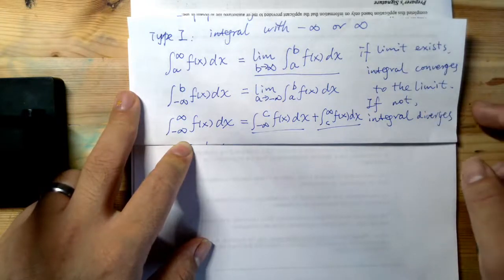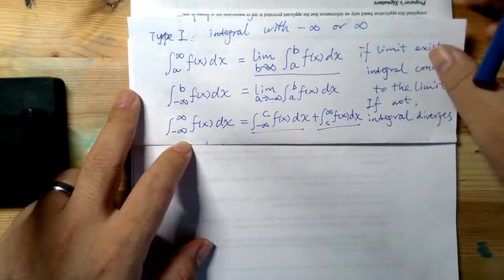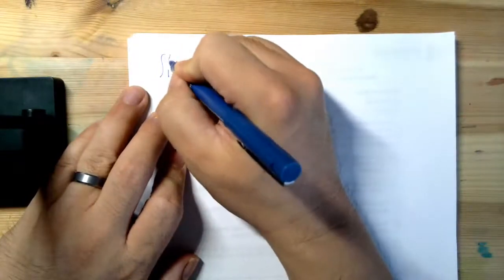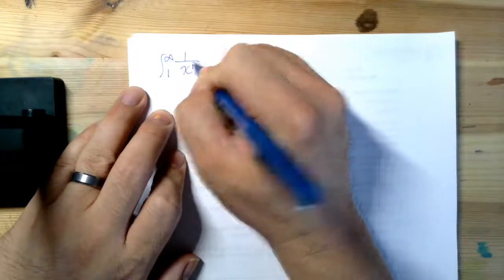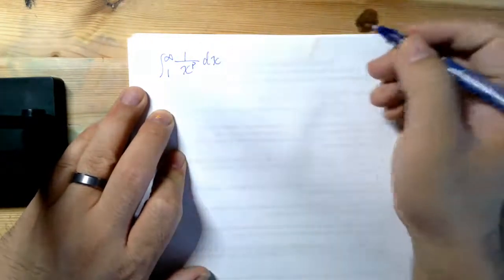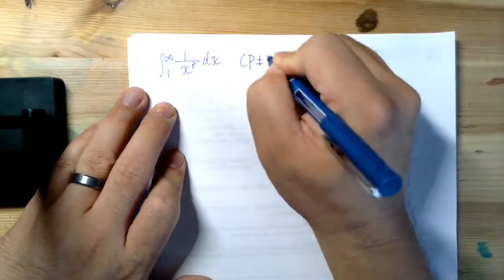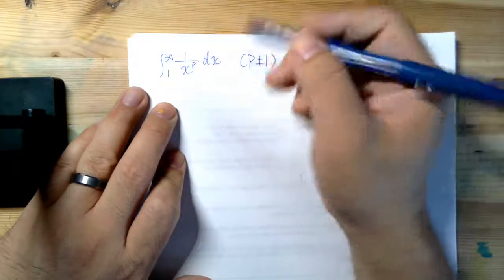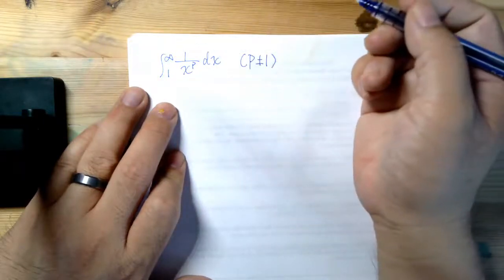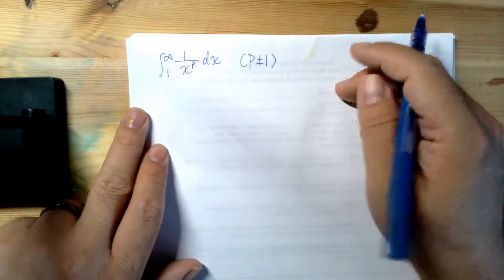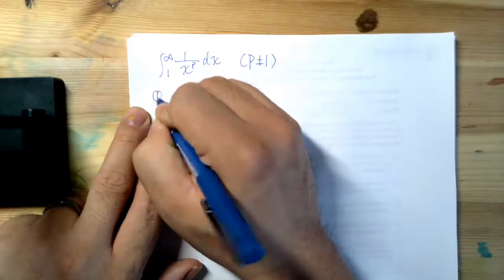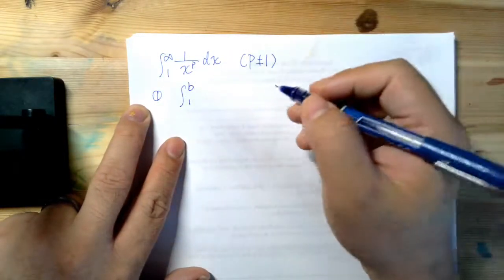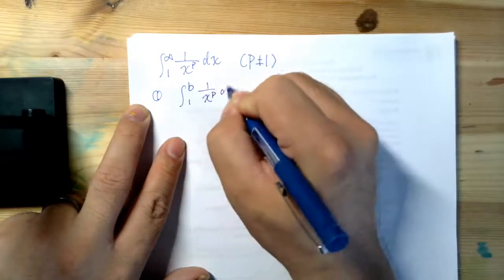So that is about the Type 1 Improper Integral. Now let us look at one example. So the example says: if I have an integral from one to infinity of one over x to the power of p dx. For here, we set p does not equal one, because if p equals one, you have one over x, and that is going to give you the natural log of x.